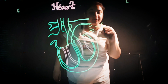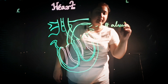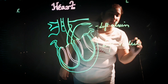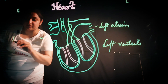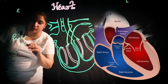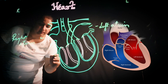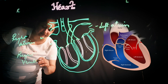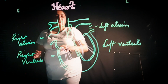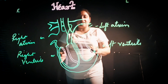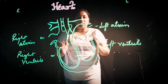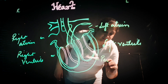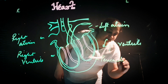The heart consists of four chambers: the left atrium, the left ventricle, the right atrium, and the right ventricle. The atria are on the upper side and the ventricles are on the lower side. The heart is covered by the pericardium, which protects the heart from mechanical injury.